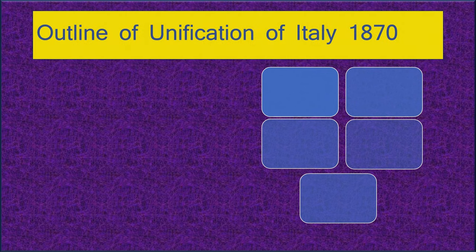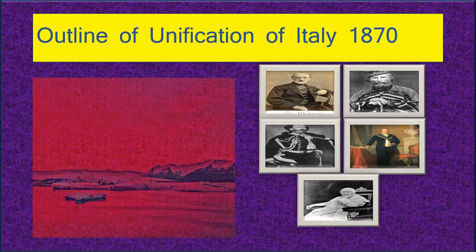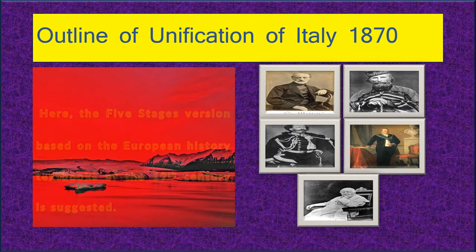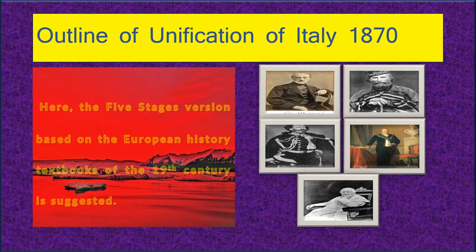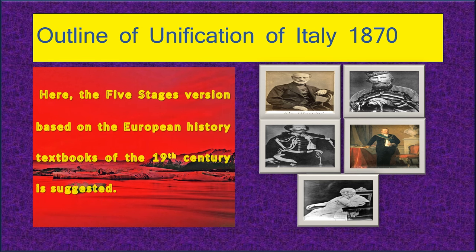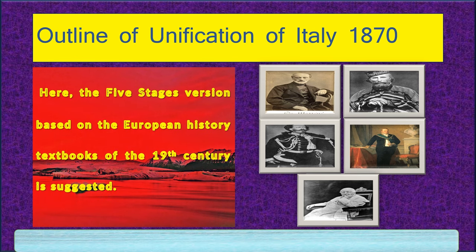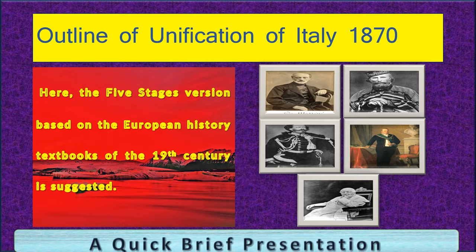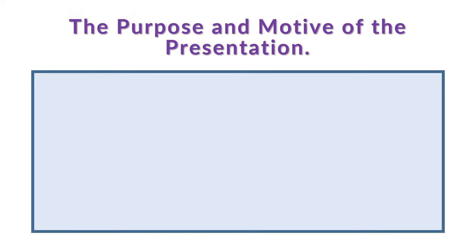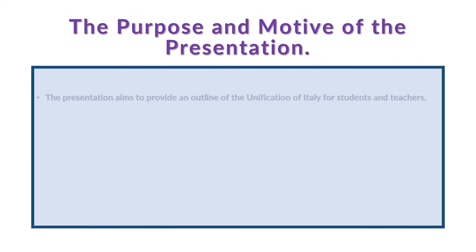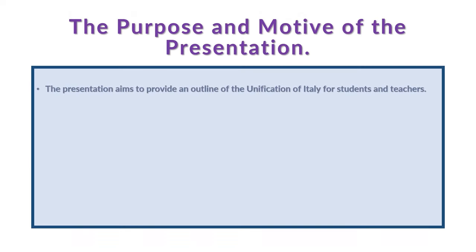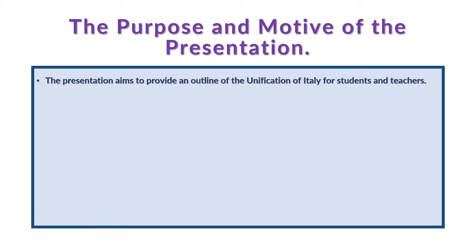This is a brief outline of the unification of Italy in 1870, presenting the five-stage version based on the European history textbooks of the 19th century. It is a quick, brief presentation. The purpose and motive of the presentation are as follows: it aims to provide an outline of the unification of Italy.